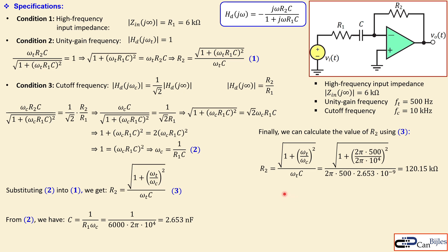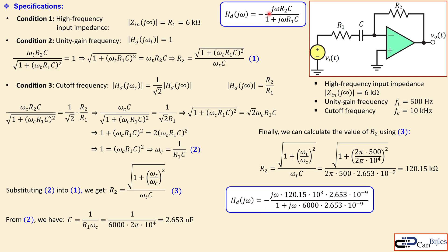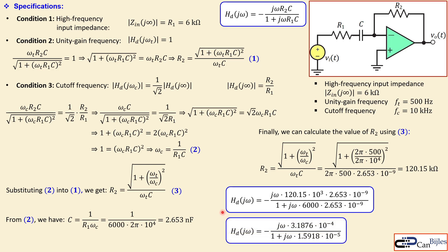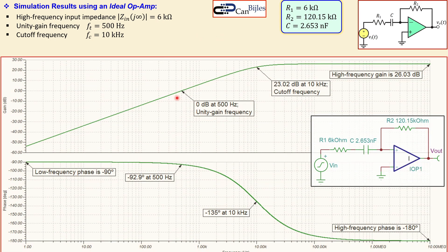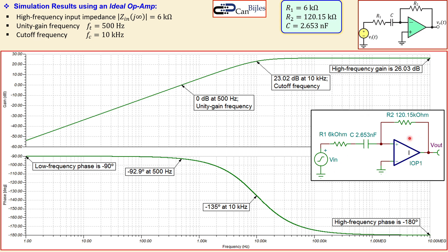Substituting all known values into equation three yields R2 ≈ 120.15 kilo ohms. The complete transfer function is then derived by substituting R1, R2, and C. With a summary of all component values determined, we start simulation using an ideal op amp first — if the ideal model doesn't meet specifications, the real op amp model certainly won't.